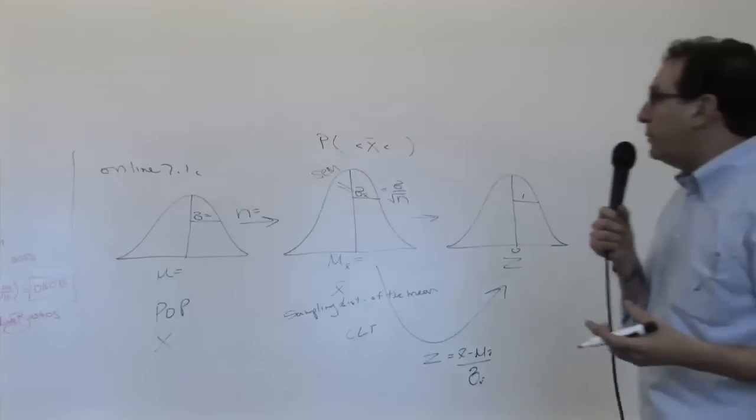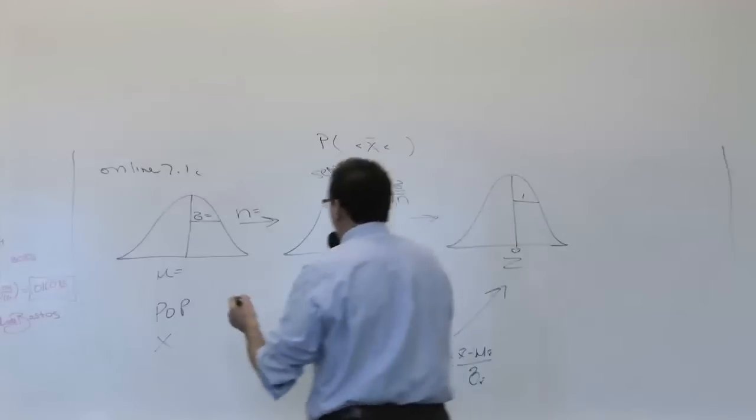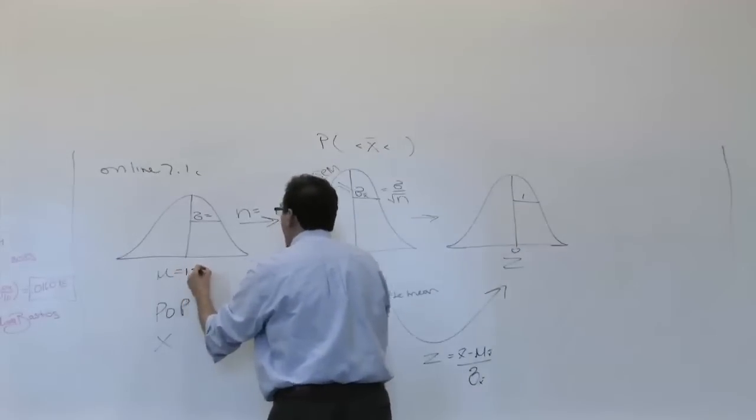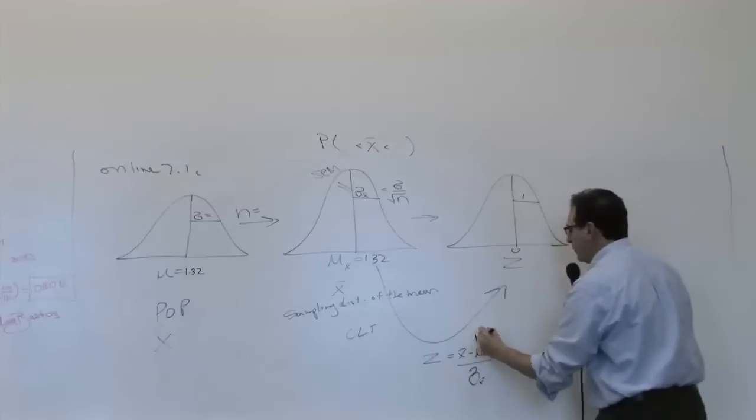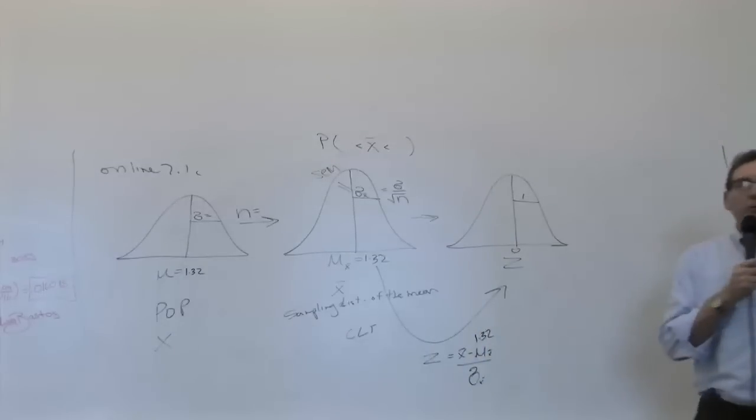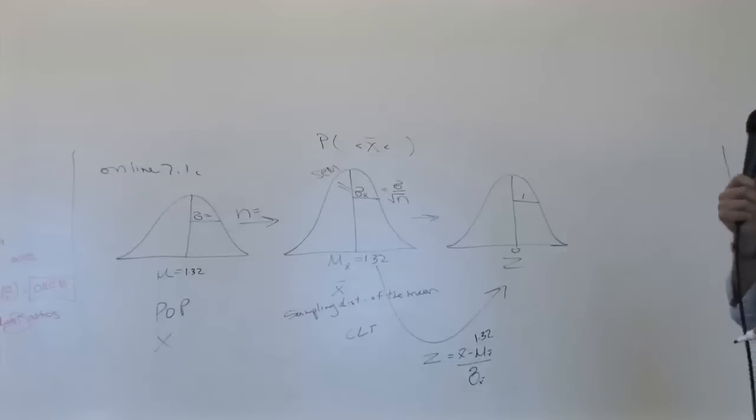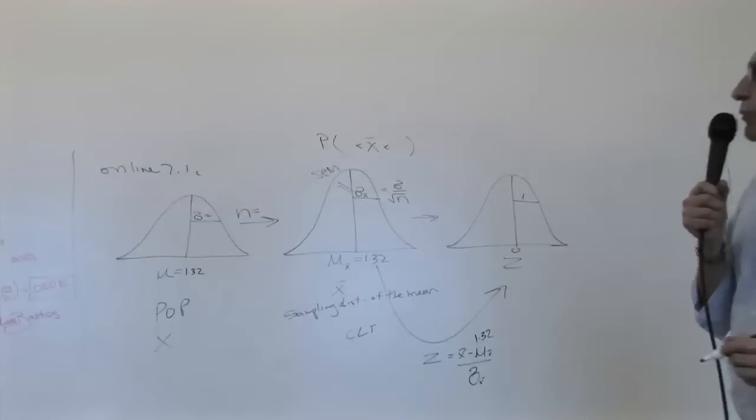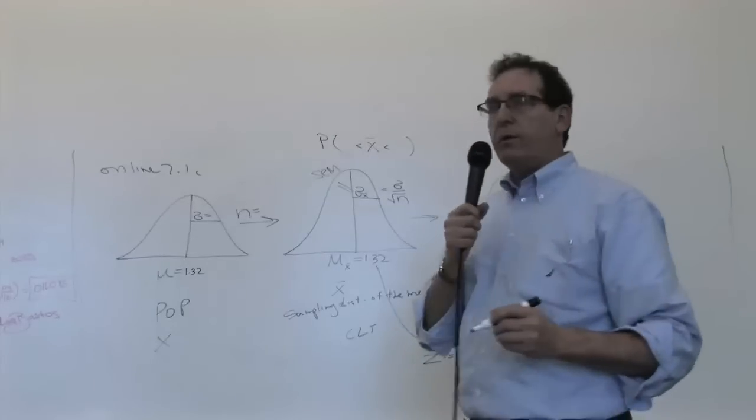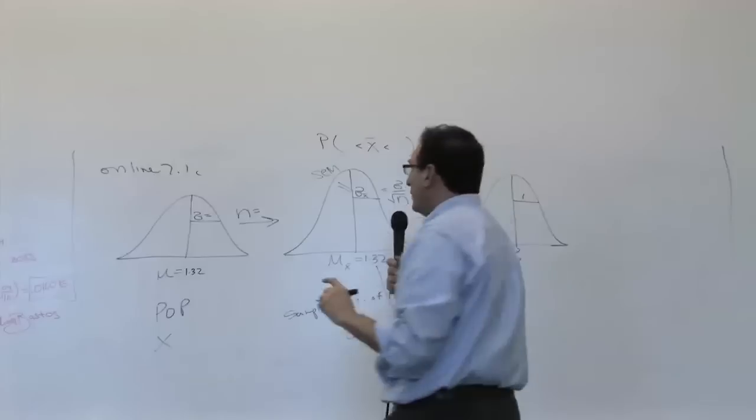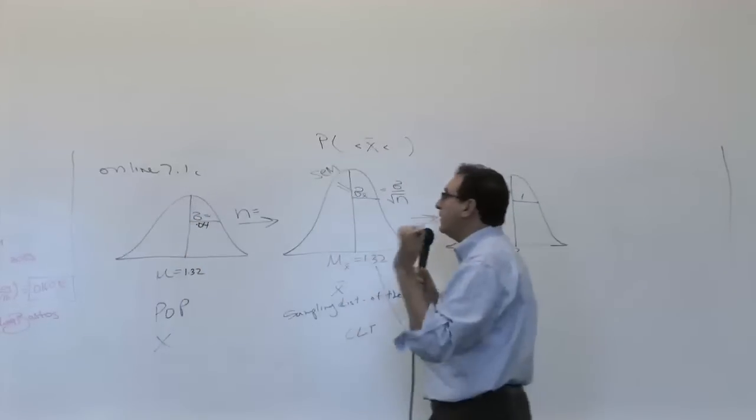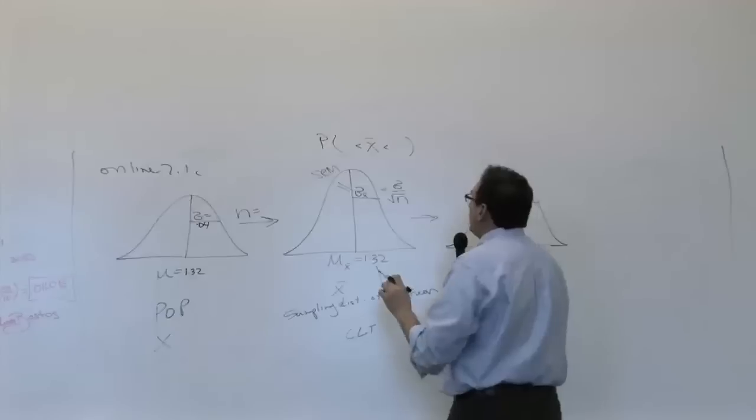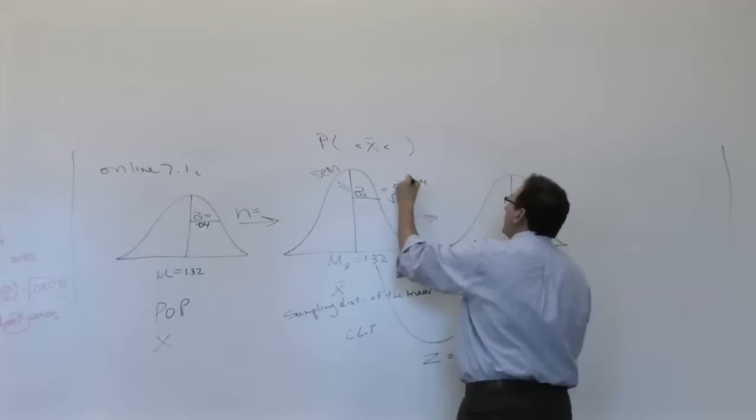In this particular example, we're told that the average is equal to 1.32. So I can put down 1.32 over here, I can put down 1.32 over here, and I can put down 1.32 in the formula, because eventually we're going to subtract that 1.32. We're told that the sigma is equal to 0.04. So sigma is equal to 0.04, which indicates how much spread from that ideal number we're going to find for each individual.